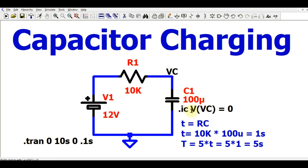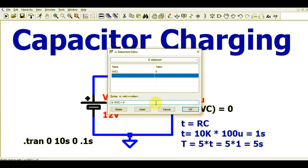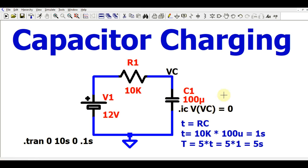To initialize this capacitor at t equals 0, we have to write the command in the SPICE directive. If you click on dot op, you can see the syntax for dot IC — V of node VC equals 0. What we are trying to do is initialize this node, which I have labeled VC.